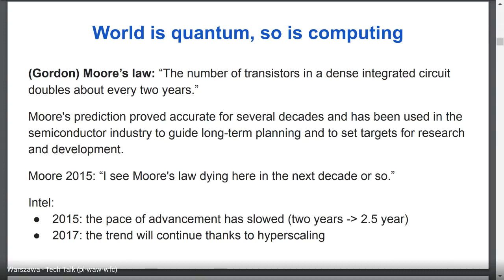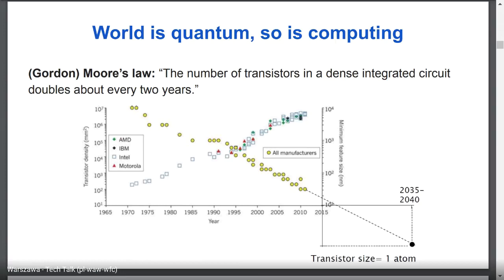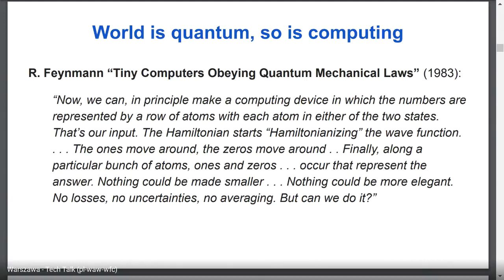Two years later, Intel said the trend would continue thanks to hyperscaling, but it cannot continue forever. If it continues for the next 15 to 20 years, the size of the transistor would be the size of one atom — a scale at which the laws of quantum mechanics start playing a crucial role. This is one of the reasons why we should start thinking about other models of computation.